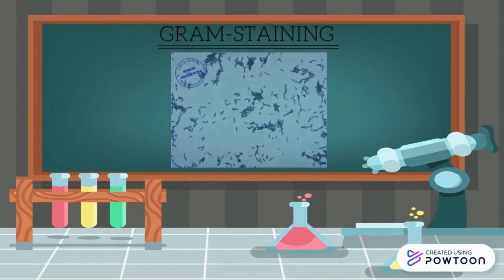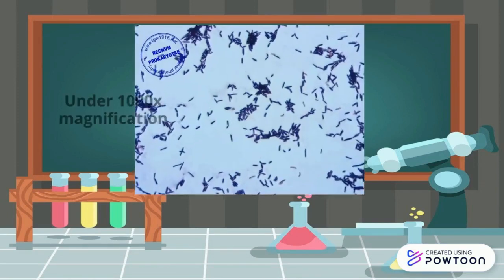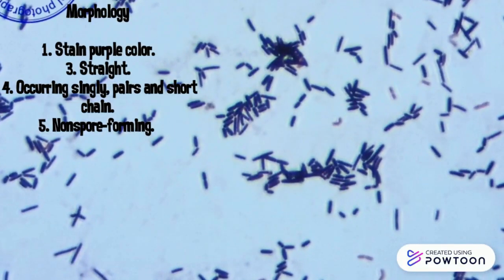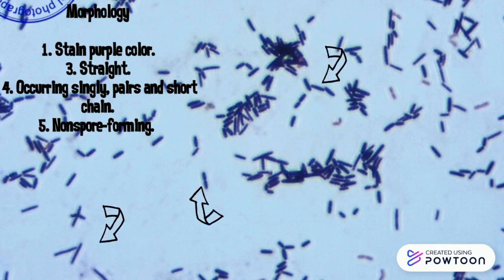Firstly, for gram staining, we have the figure under 1000 times magnification. You will see the morphology after the gram staining. It shows the bacteria stained purple colour, rod-shaped, occurring single, pairs, and in short chain. It also non-spore forming.